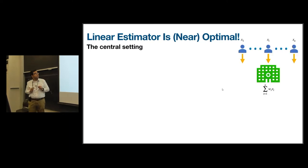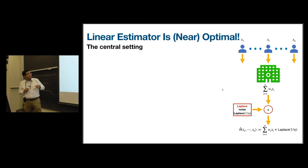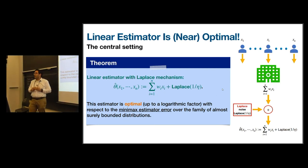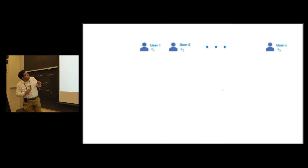Our first result is that we show that the linear estimator is in fact optimal up to logarithmic factor for the heterogeneous setting as well. Before I state the result, let me say what I mean by linear estimator. Users share their data with the platform, and the platform computes a weighted average sum of Wi Xi. Then the platform adds a Laplace noise with parameter 1 over eta to preserve the privacy. The estimator would be sum of Wi Xi plus some Laplace noise. What we show is that this estimator is optimal up to log n factor with respect to the minimax estimation error when we take calligraphic P as the family of almost surely bounded distribution.